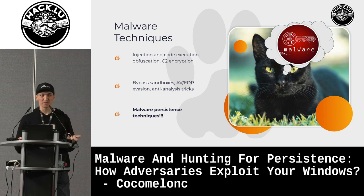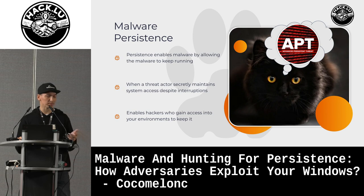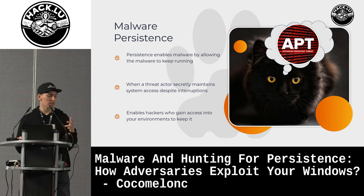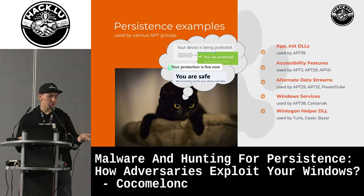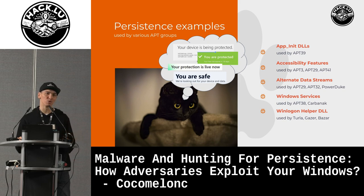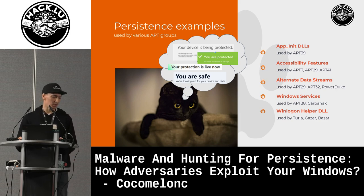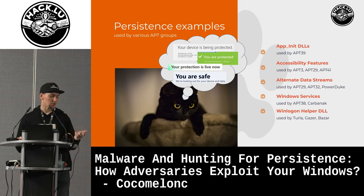Of course, the last one is malware persistence. The value of malware is greater when it has a persistence mechanism — surviving reboots, victim restarts, or forensic tool usage. Well-known tricks used by popular APT groups include abusing DLLs by replacing them in the Windows registry — used by APT39 — and accessibility features abused by APT3, APT29, and APT41 from China.